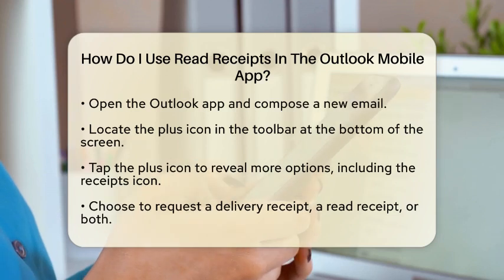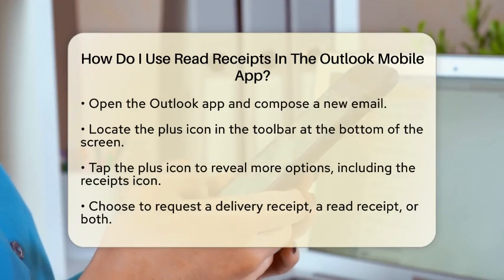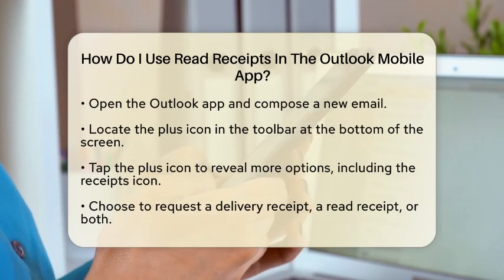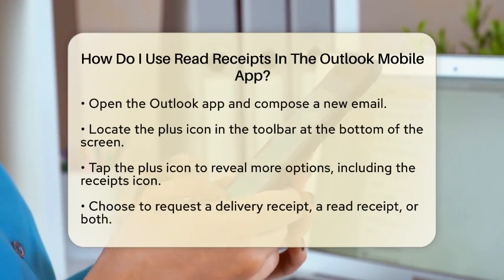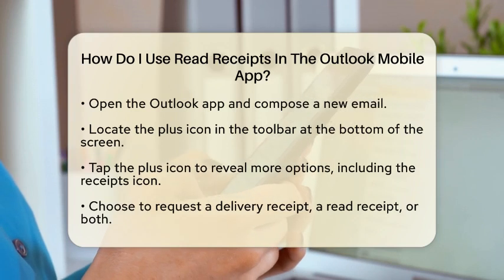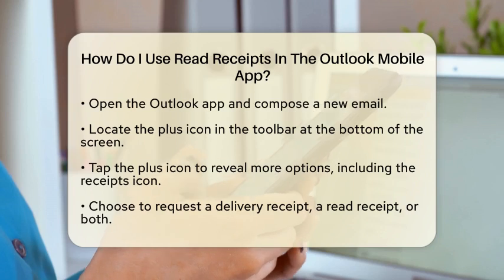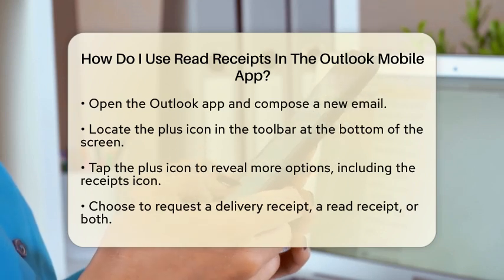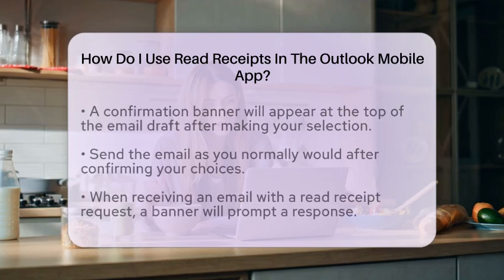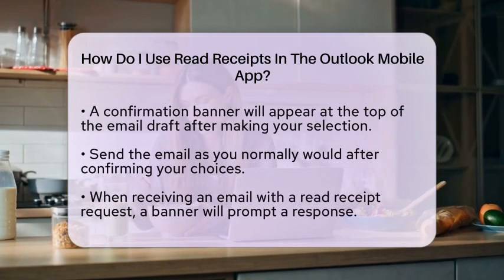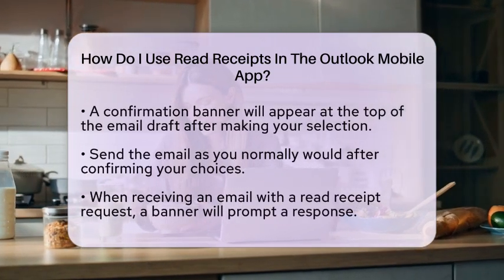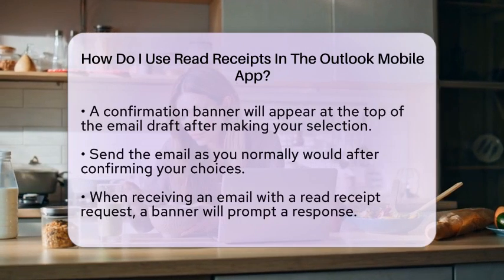This is where the magic happens. You can choose to request a delivery receipt, a read receipt, or both. After you make your selection, a banner will appear at the top of your email draft confirming your choice. This is a good way to double check that you have requested the right receipts before sending your email. Once everything looks good, go ahead and send the email just like you normally would.